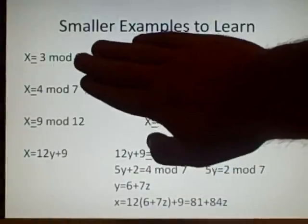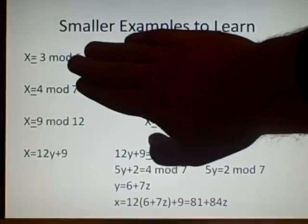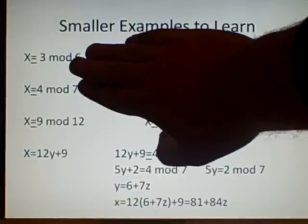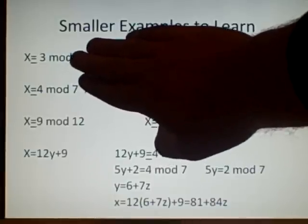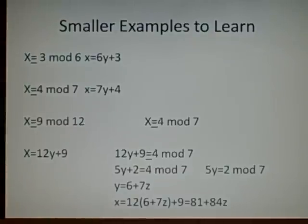For this one, again, we have, well, the answer's 4 again, because if x is 4, then it'll work, plus the 7 times a multiplier, so 7y plus 4, yeah?